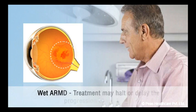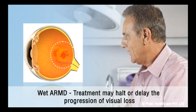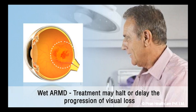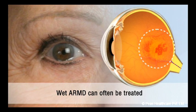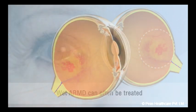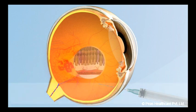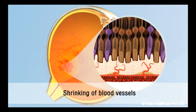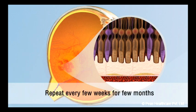For the less common wet ARMD, treatment may halt or delay the progression of visual loss in some people. Wet ARMD can often be treated if it is caught early enough, and this is normally done by injecting a drug into the fluid inside your eye. This shrinks the new blood vessels that are leaking and putting pressure on the macula. You may need to have this repeated every few weeks for a few months.